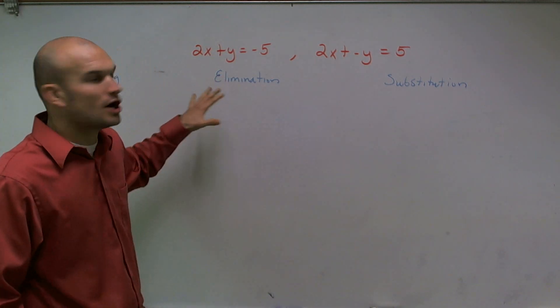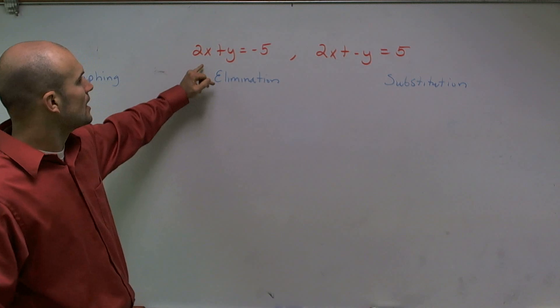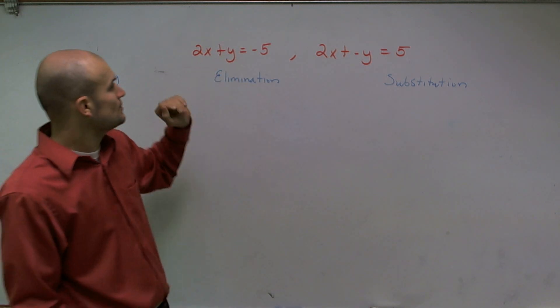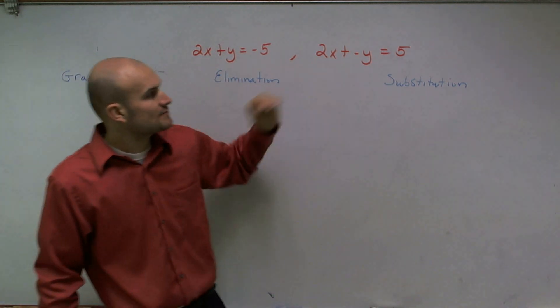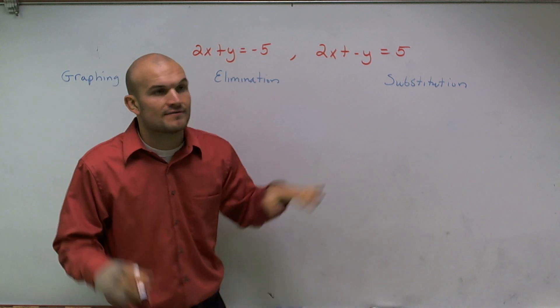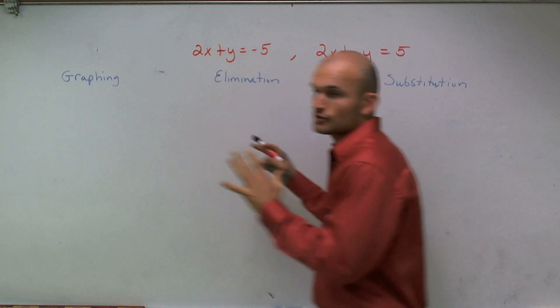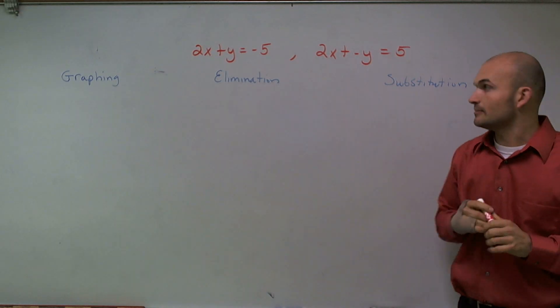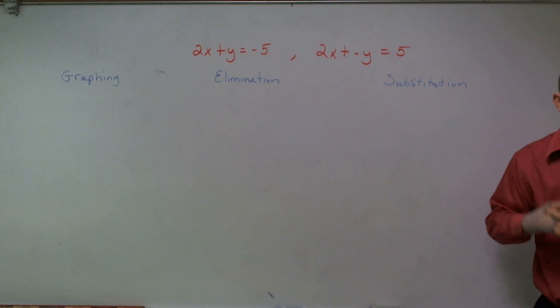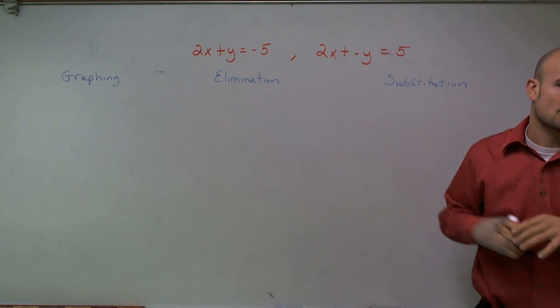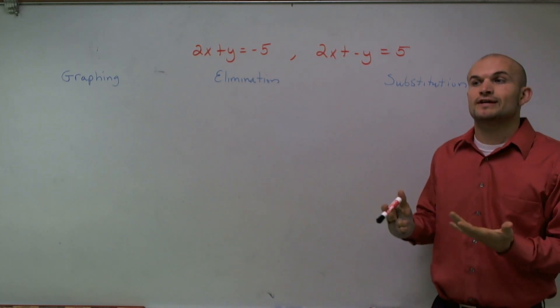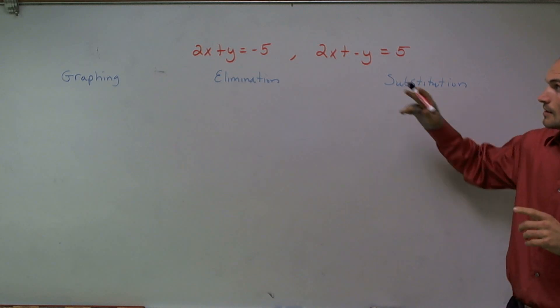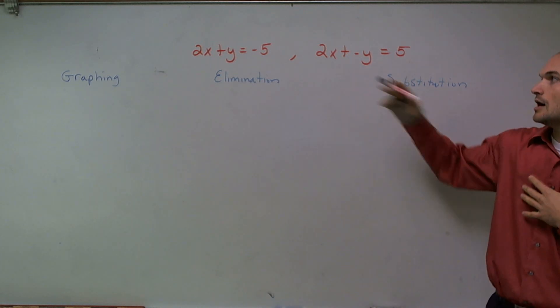I want to show you how to solve a system of equations when you have two equations. I have 2x plus y equals negative 5, and I have 2x plus negative y equals 5. I'm going to do this three different ways: first by graphing, then by elimination, and then by substitution, because I want you to see the three different methods, two algebraically and one graphically, that we can use to solve a system of two equations.